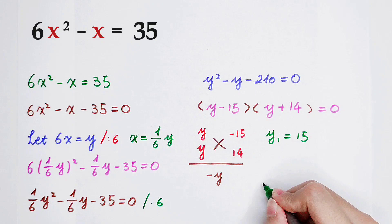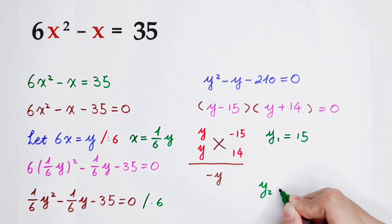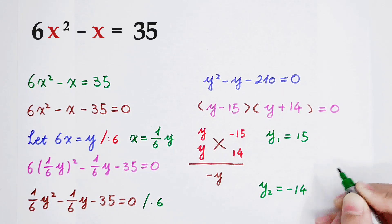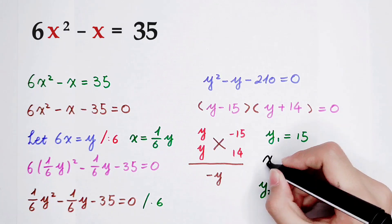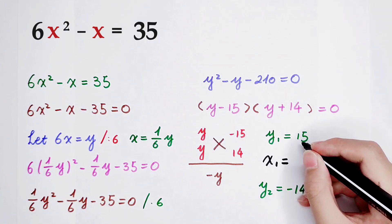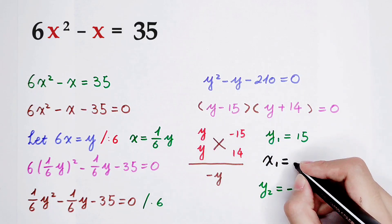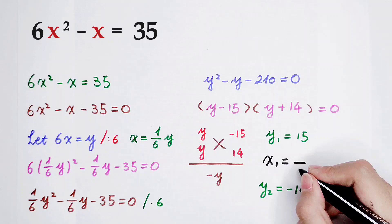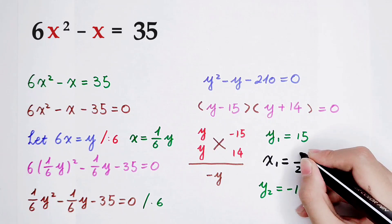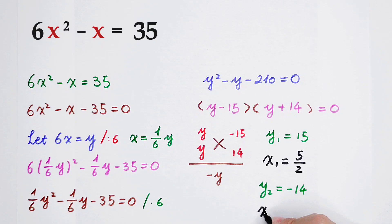We can get the value of x. x1 equals 15 divided by 6, simplify it, it is 5 over 2. From the second case, it is negative 14 divided by 6, which is negative 7 over 2.